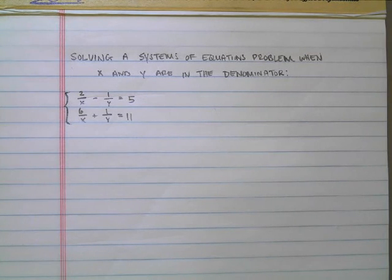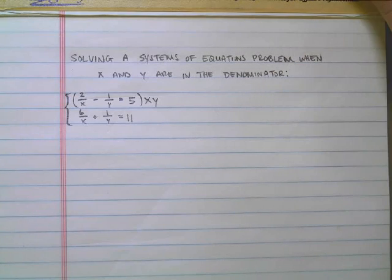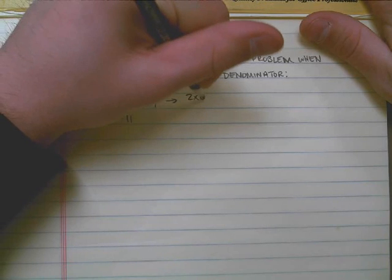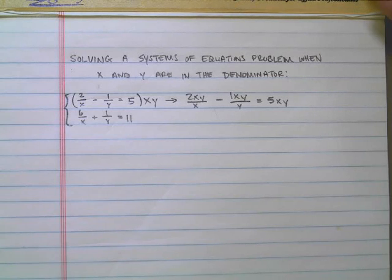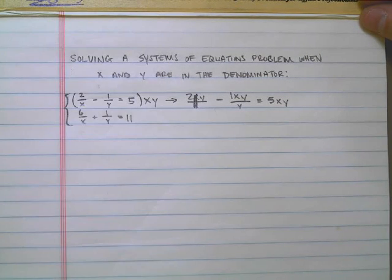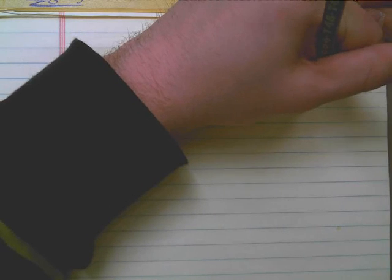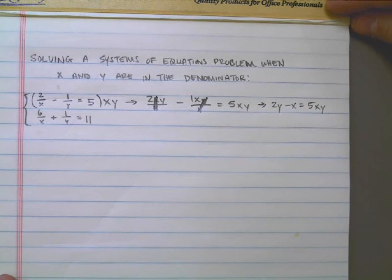So if we took, for instance, this top equation and multiplied every single term in it by xy, we would have 2xy over x minus 1xy over y equals 5xy. It may seem kind of silly, but what we notice is that the x's go away here. The y's go away here. So essentially, it becomes 2y minus x is equal to 5xy. That is something we can work with. That looks a little bit simpler, doesn't it?